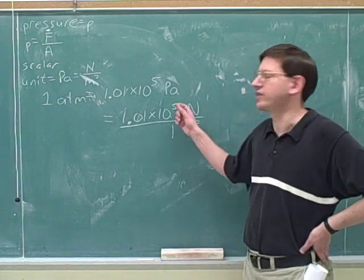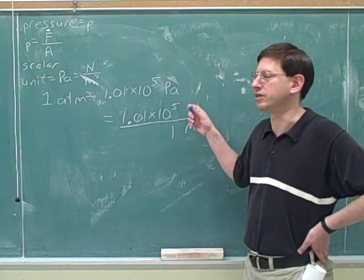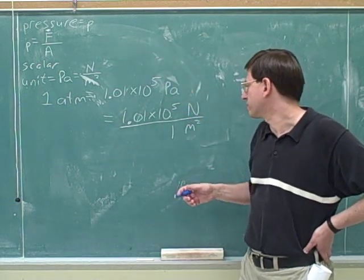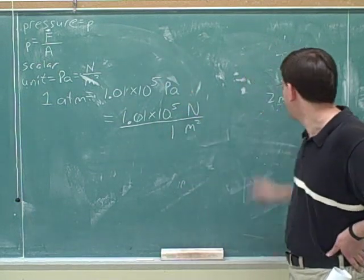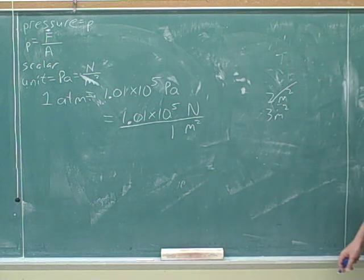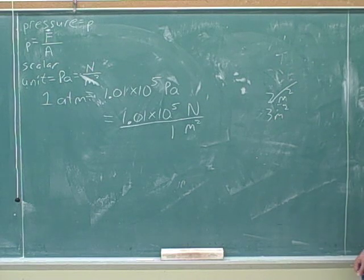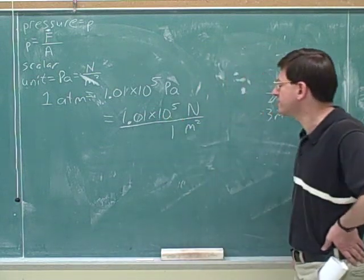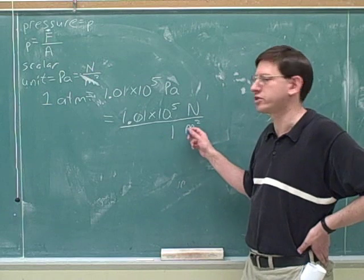That should make sense. The bigger the square is, the more atmosphere there is on top of it. So the more force it's going to feel, the more weight it's feeling from that atmosphere. The pressure only tells us the force on one square meter. How about if I drew a three square meter box, how can we figure out what the force was on that? It would be triple. 3.03 times 10 to the fifth newtons.